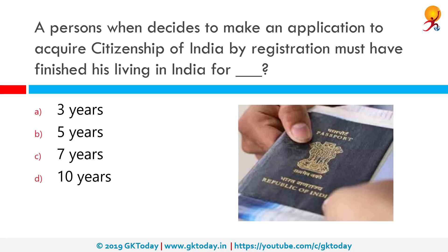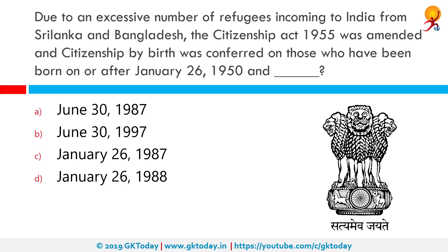A person who decides to apply for citizenship of India by registration must have lived in India for how many years? The correct answer is five years. As per the provisions of Section 5(1)(g) of the Citizenship Act 1955, a person who is registered as an Overseas Citizen of India for five years and is residing in India for one year out of those five years is eligible to apply for Indian citizenship.